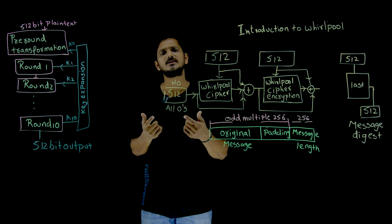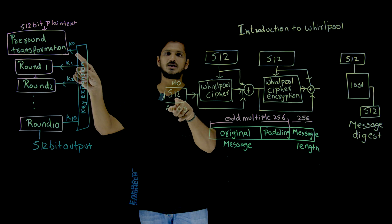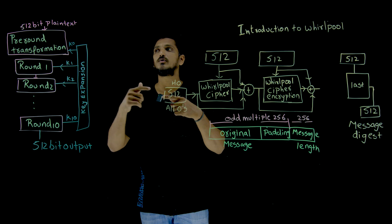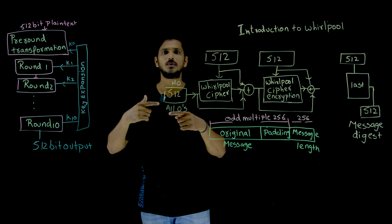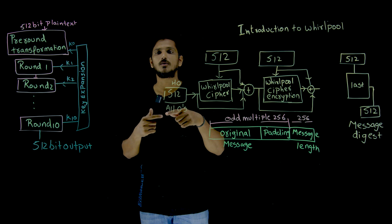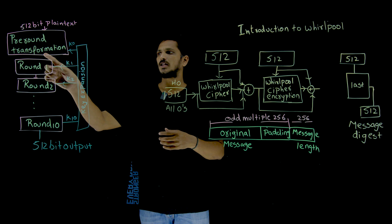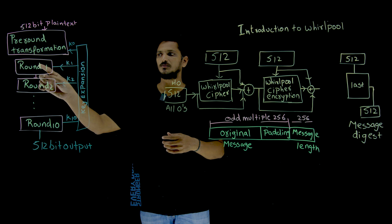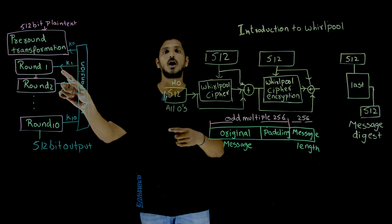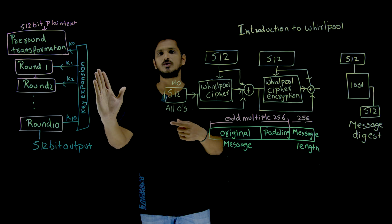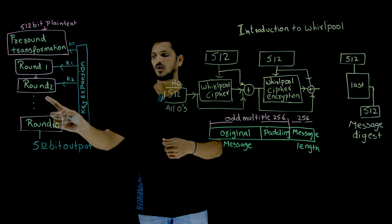In the pre-round transformation — similar to AES — the original key K0 is XORed with the actual 512-bit plain text. That XOR output is then given as input to Round 1. For Round 1, the key K1 is used. How K1 is generated will be discussed in our coming classes.